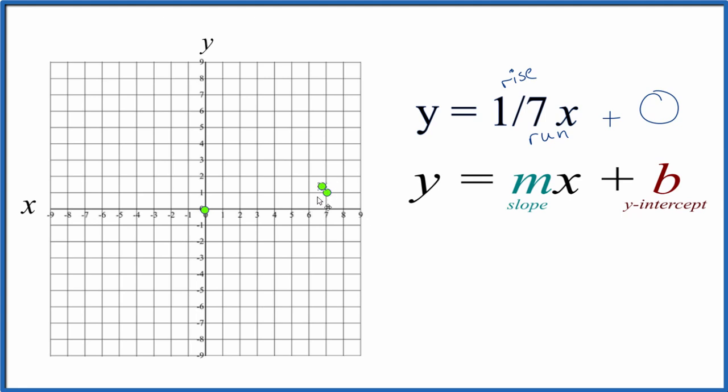We could do that again. We could rise one from here and go over seven, but we're way off our graph paper. Let's do the opposite. We'll go back to our y-intercept, and we'll go down one and go to the left, seven.